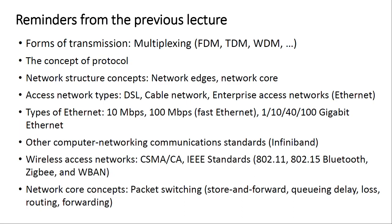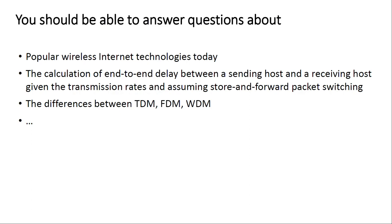Let's remind ourselves what we covered in the first weeks. We talked about forms of transmission multiplexing like FDM, TDM, and WDM. We talked about concepts of protocol, network structure, network edges, network core, access network types like DSL, cable, enterprise access networks, types of Ethernet, other communication standards, wireless access networks, and network core concepts like packet switching, store-and-forward, queueing delay, loss, routing, and forwarding.